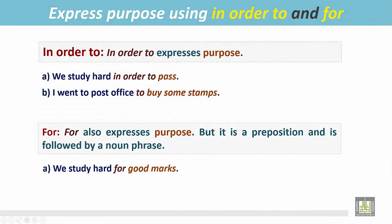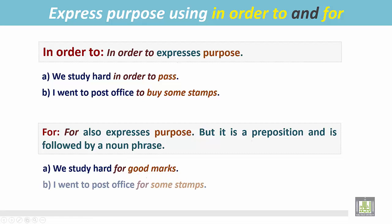See the examples. 'We study hard for good marks' — 'for' is the preposition followed by the noun phrase 'good marks.' 'I went to the post office for some stamps' — 'for' is the preposition followed by the noun phrase 'some stamps.'